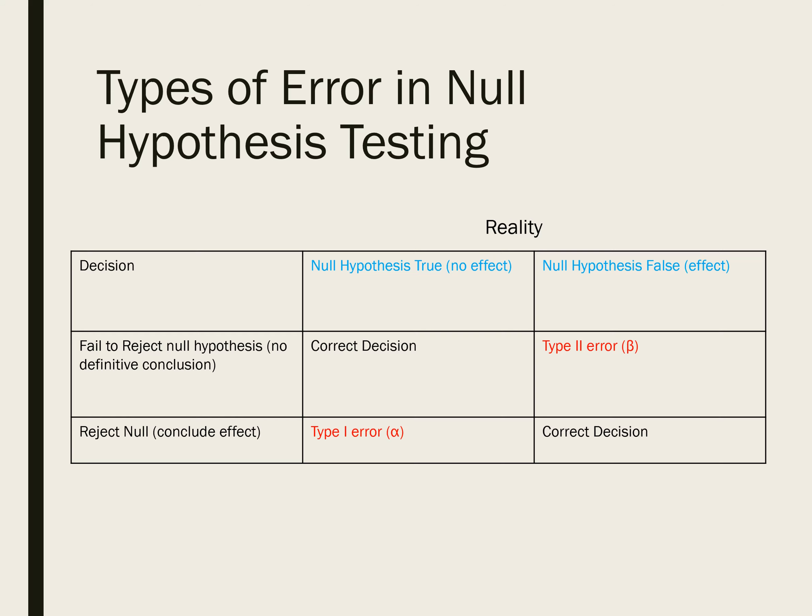Assuming reality is either that the null hypothesis is true or false — and we really don't know that reality, which is probably why we're collecting data from a sample to figure out what is the reality in the population — our decision can be either to reject the null and conclude there is a difference, effect, or relationship, or fail to reject the null and not be able to make a conclusion. If we fail to reject the null and the null is true, we've made a correct decision. If we reject the null and the null is false, meaning there is an effect, we've also made a correct decision.